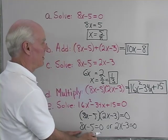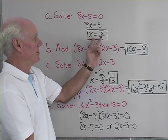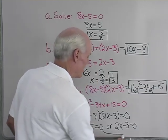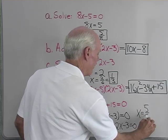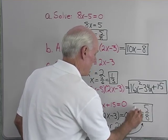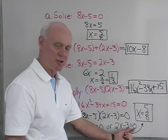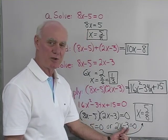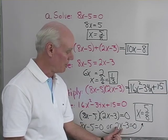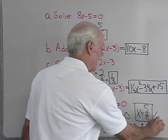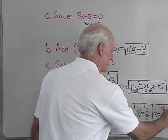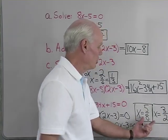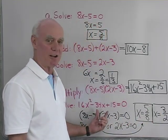8x minus 5 equals 0. Well, I solved that right here. That's x equals 5 eighths. So let's put that over here, x equals 5 over 8. Or 2x minus 3 equals 0. I'll add 3 to both sides, divide by 2, and I get x is equal to positive 3 halves. There's my other solution. So two solutions to this quadratic equation right here.